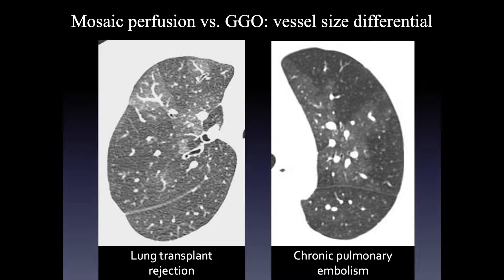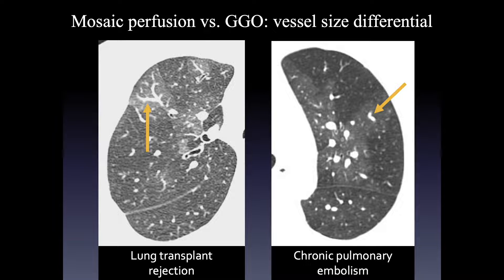Vessel size differential is helpful when you see it, but not helpful when it's not present. In these two cases, we see much bigger vessels in the more normal opaque lung and much smaller vessels in the abnormally lucent lung. That difference in vessel size really helps predict that the lucent lung is abnormal and the pattern is mosaic perfusion.